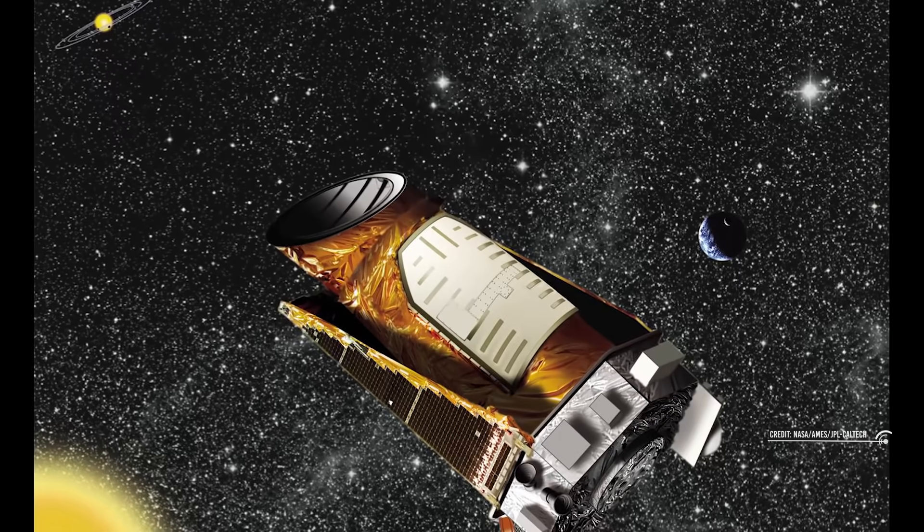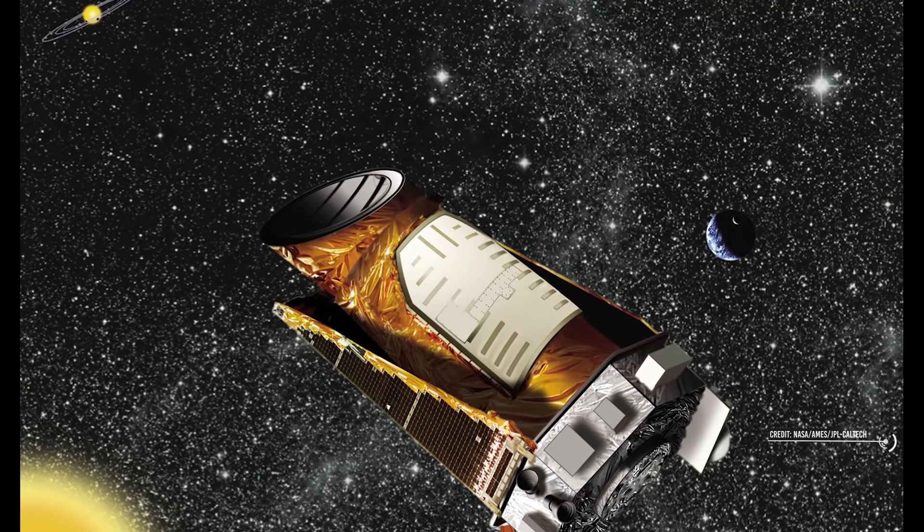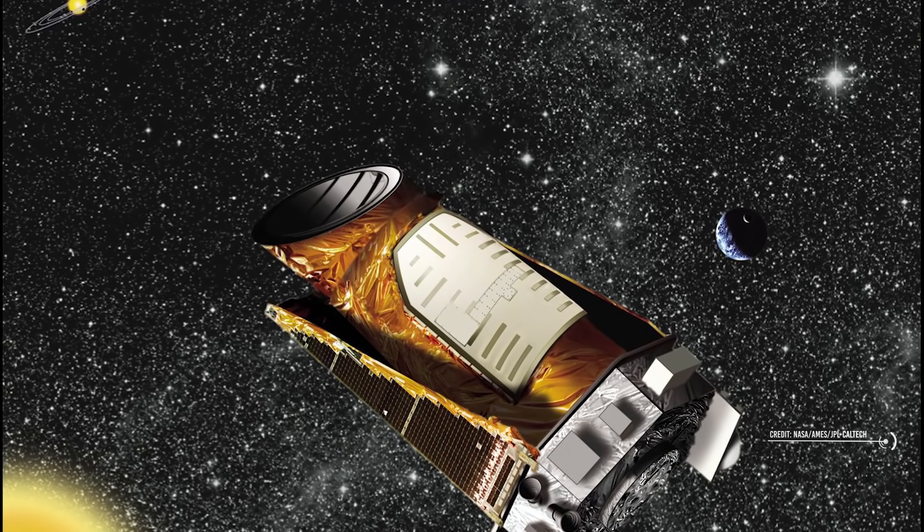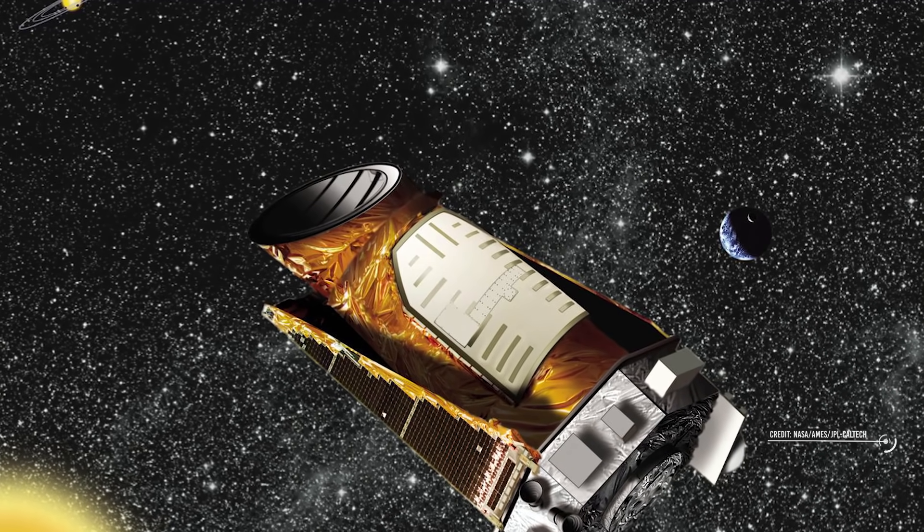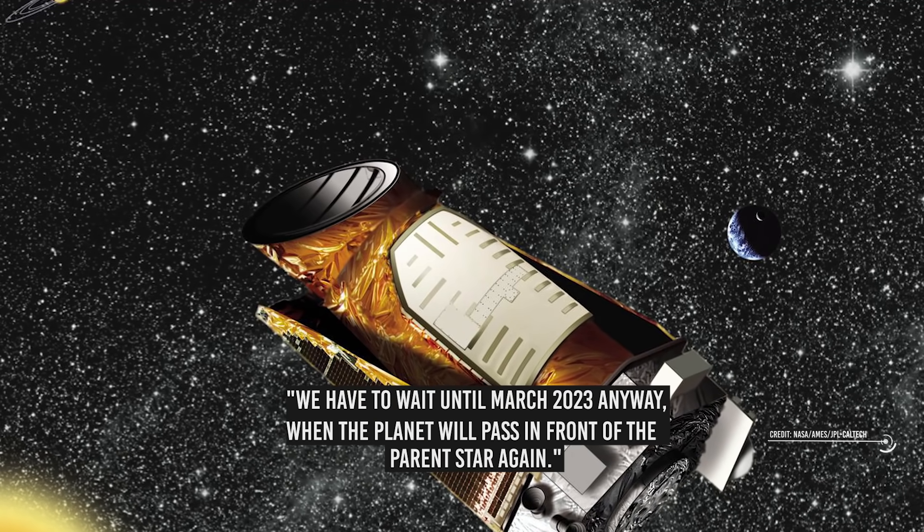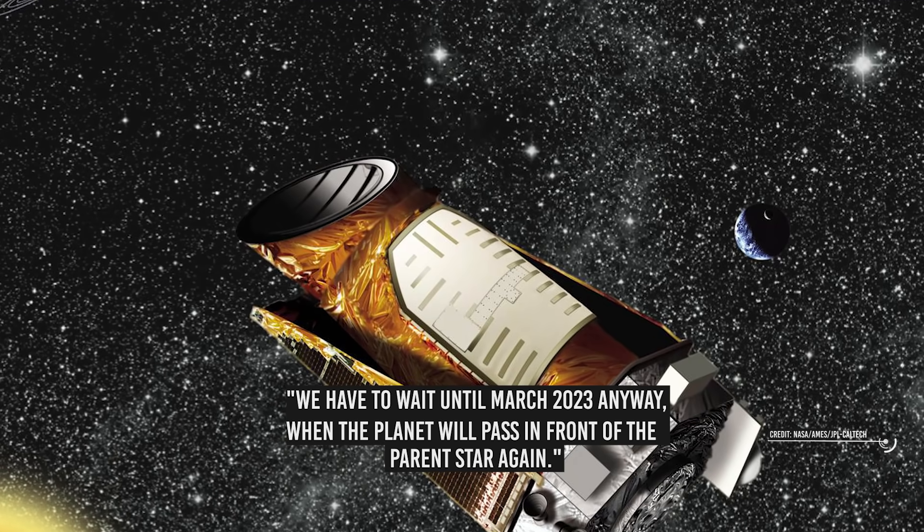Kipping emphasizes: Kepler is no longer operational, so we can no longer monitor the candidate exomoon using the same telescope. But we can use the Hubble or James Webb Space Telescope to look at it again. However, we should not expect a definitive answer in the short term. We have to wait until March of 2023, anyway, when the planet will pass in front of the parent star again.